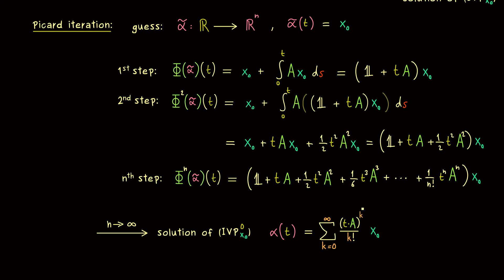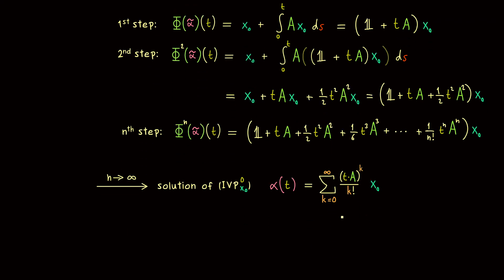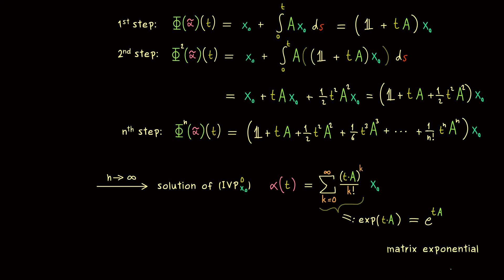For this reason, the matrix that comes out of this limit gets a special name: it's called the matrix exponential. You can see why — the formula is exactly the one we know for the exponential function. The only thing that is new is that we put a matrix instead of a number into the exponential. Otherwise the definition as a series looks literally the same. For this reason one also often writes simply e^{tA}, which represents the same thing: the well-defined limit of the partial sums.